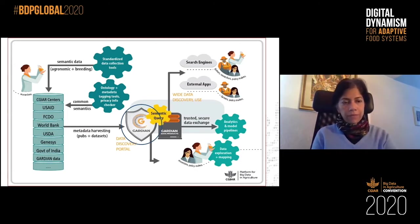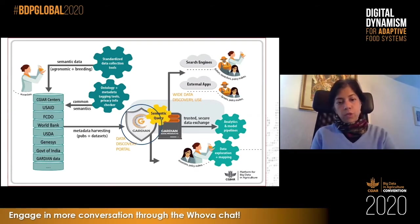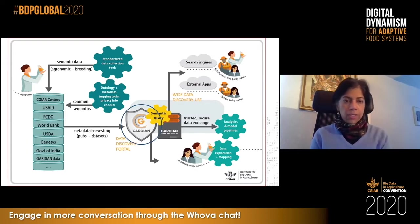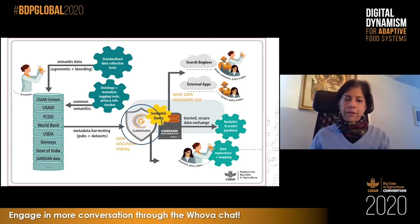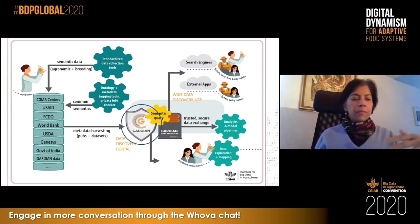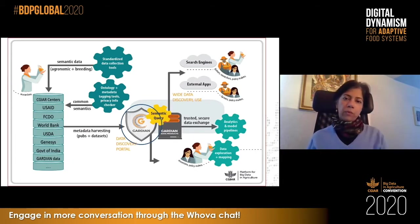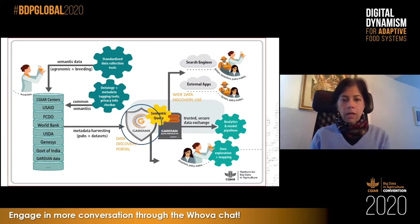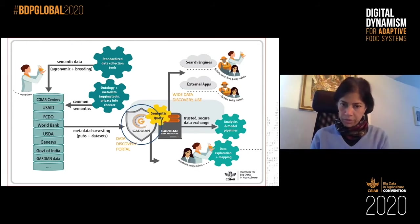On the left-hand side you see these boxes. We have data right now that's discoverable coming from the 30-odd CGIAR repositories, USAID's Development Data Library, the UK's Foreign Commonwealth Development Office, the World Bank's LSMS — Living Standards Measurement Survey — data. There's also the USDA's Ag Data Commons that we're harvesting, the Government of India's Open Data Portal, and there are a few more that will soon be available. All of these data are available as a one-stop shop so that you can do a keyword search and retrieve data from all across these different providers.